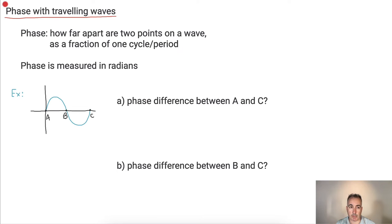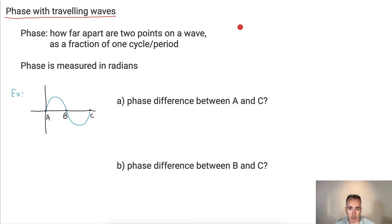So let's look at an example with phase for traveling waves. What is the phase? It's how far apart two points are on a wave as a fraction of one cycle or one period. Remember, one cycle or one period is going to be 2π radians. We're going to measure this phase in radians.